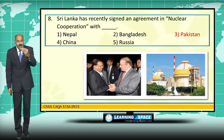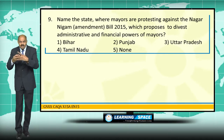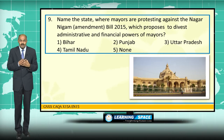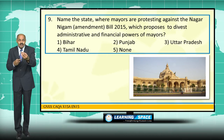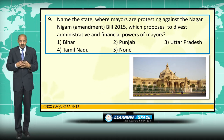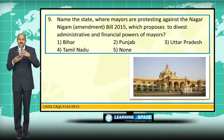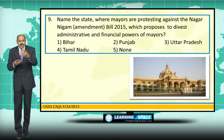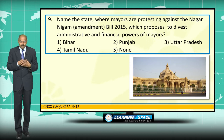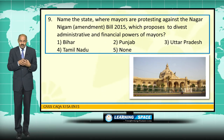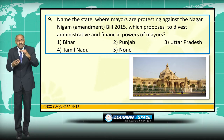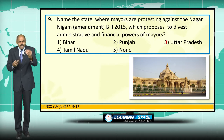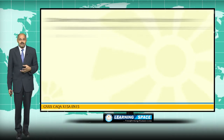The state where mayors are protesting against the Nagar Nigam Amendment Bill 2015, which proposes to divest administrative and financial powers of mayors, is Uttar Pradesh. If this law is implemented, the powers of mayors — both administrative and financial — will be limited, which is why mayors are protesting against this bill.